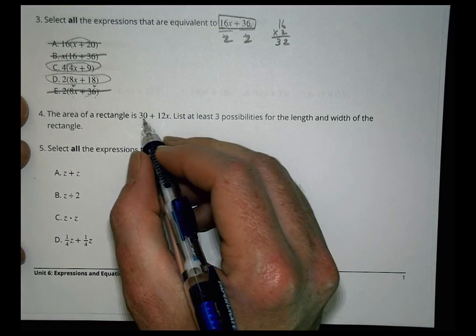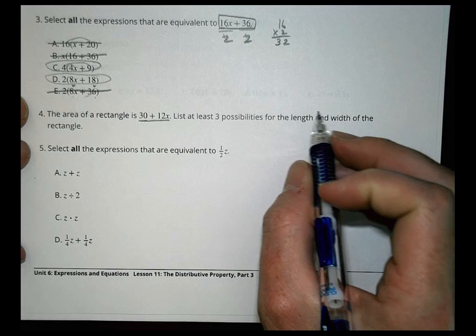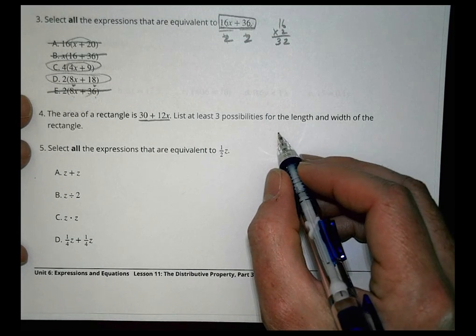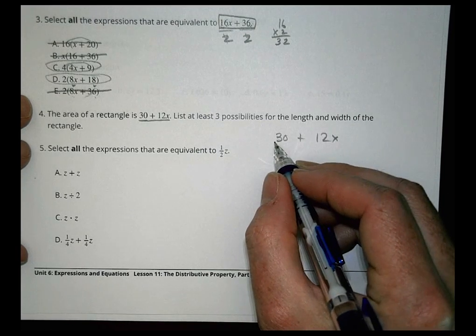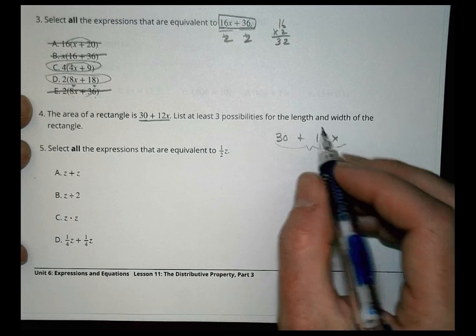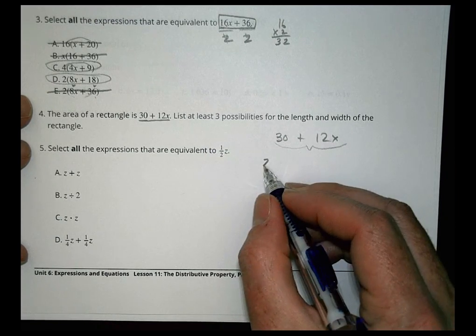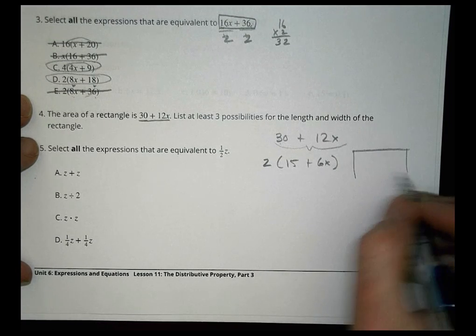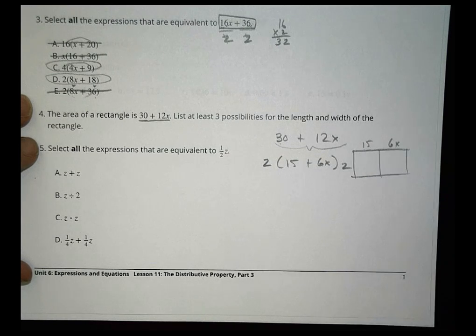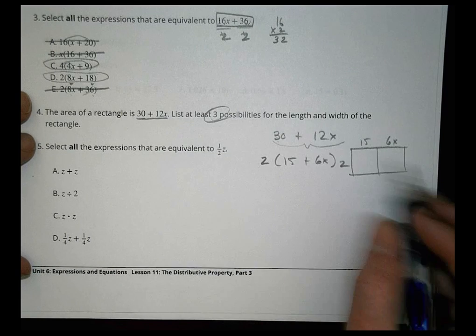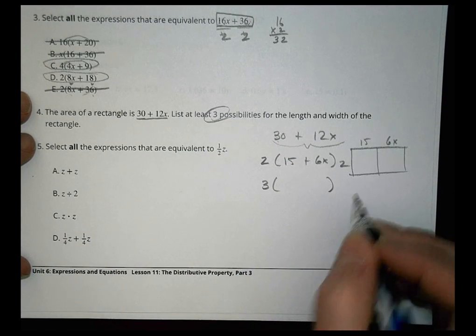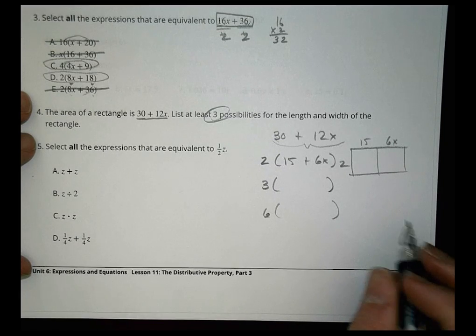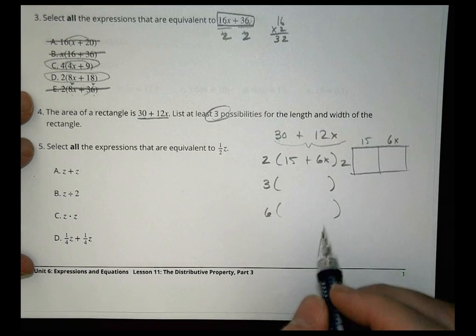Number 4. The area of a rectangle is 30 + 12x. List at least 3 possibilities for the length and width of the rectangle. What can we factor out of all of this to have two numbers we multiply together? I know they're both even, so I could factor out a 2. If I factor out a 2, I would have 15, that's half of 30, plus 6x. So I'd end up with a rectangle that looks like this: a length of 2 and maybe a length of 15 plus 6x. What else could I do? I want three possibilities. I factored out a 2. Can you factor out a 3? Yes. You could factor out a 3. You could also factor out a 6 because 6 goes into both of those as well. I'll let you figure those ones out and see what you come up with.